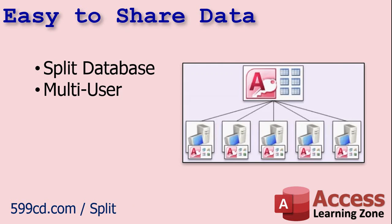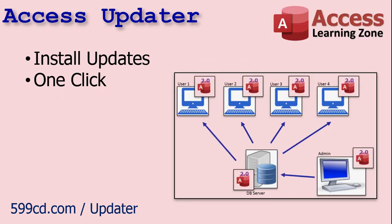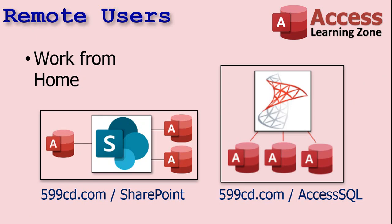If you've got multiple people who need to use the database, Access makes sharing very easy. All you have to do is split the database, put the tables on one computer, a server, or even just another workstation on your network, and put a front-end file on everyone else's computer that needs to use it. I've even got a tool available that helps you to update everyone's front-end files with a single click — it's called the Access Updater. You can easily integrate with an online database such as SQL Server or SharePoint to share your data over the internet, which is handy if you have remote workers.